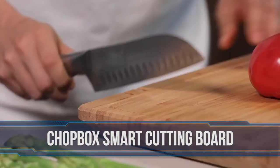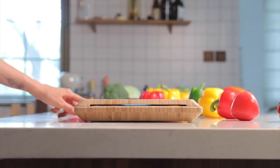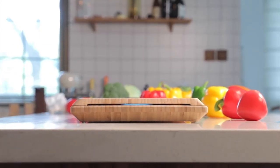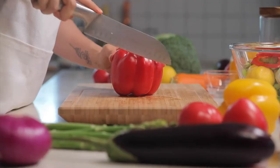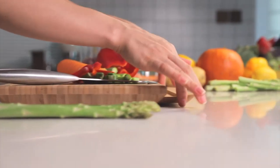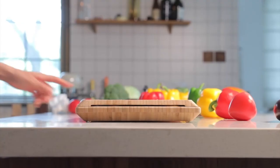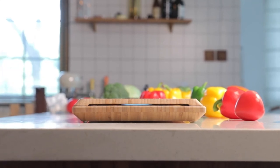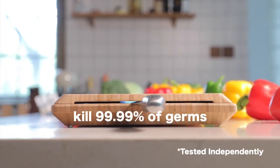Number two, Chopbox Smart Cutting Board. The most innovative kitchen gadget is here, and it features 100% natural organic bamboo, making it ideal for everyday use. The gadget comes with two cutting board surfaces for multiple uses, a 54 nanometer ultraviolet light to sanitize up to three knives at once, and both cutting surfaces.